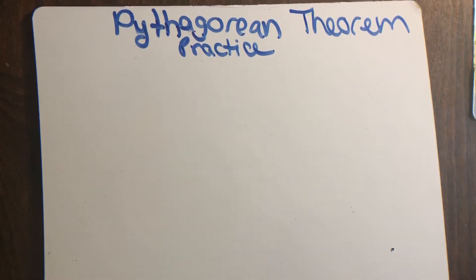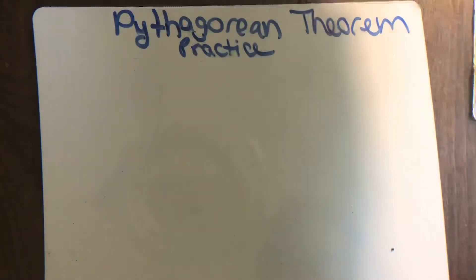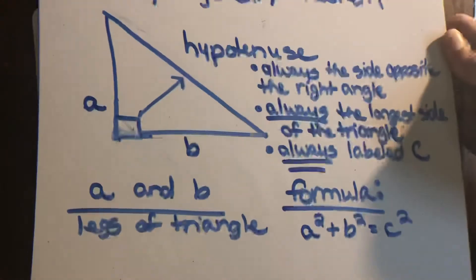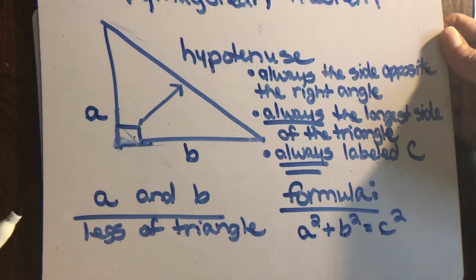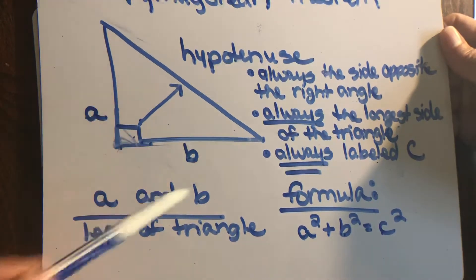Time for some Pythagorean Theorem practice. So if you've watched the previous videos, remember, Pythagorean Theorem is finding the length of the side of a right triangle if you know two of the other sides.